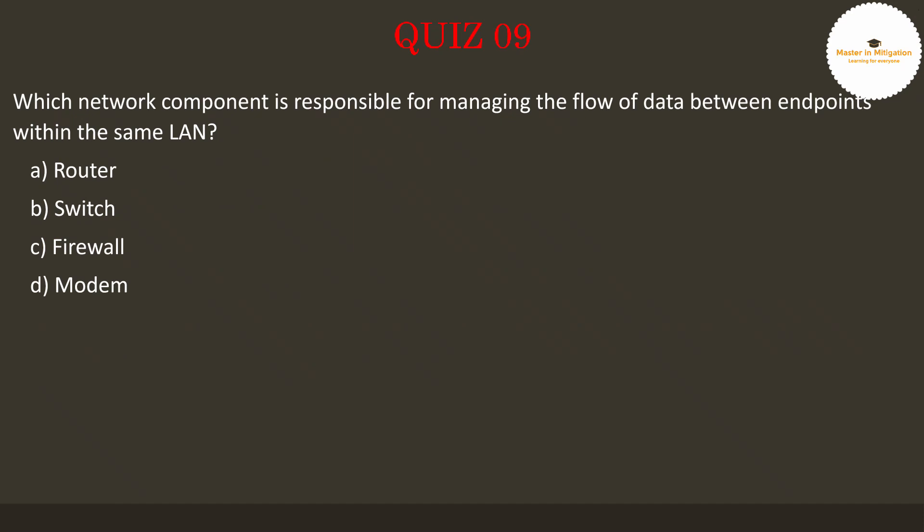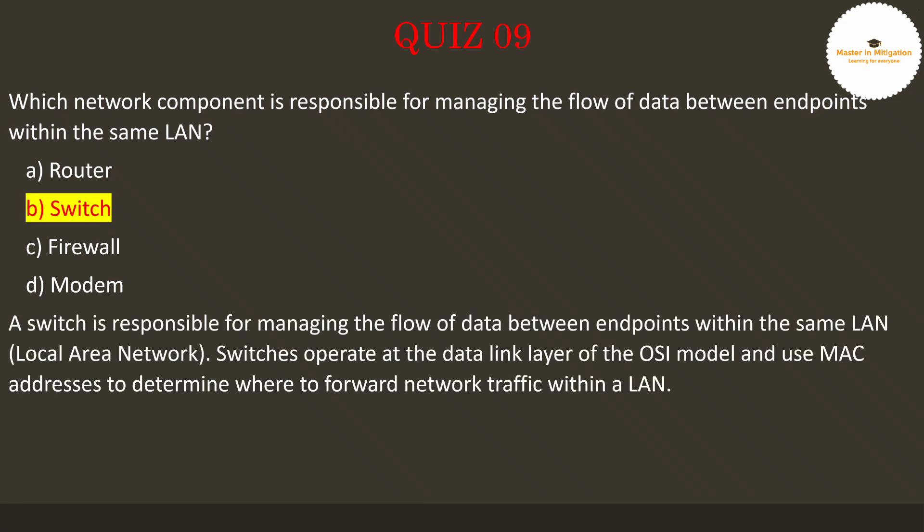Let's go to question 9. Which network component is responsible for managing the flow of data between endpoints within the same LAN? Pause the video now to select the best answer. The answer is B — switch. A switch is responsible for managing the flow of data between endpoints within the same LAN. Switches operate at the data link layer of the OSI model and use MAC addresses to determine where to forward network traffic.